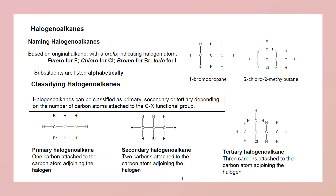Today's topic is about halogenoalkanes. The term halogenoalkane means when a halogen such as chlorine, bromine, or iodine is attached to a carbon chain. If fluorine is attached we use the term fluoro, chlorine gives chloro, bromine gives bromo, and iodine gives iodo.